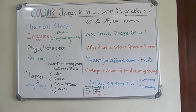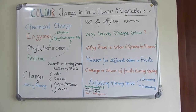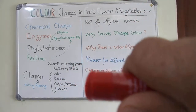Everybody knows chlorophyll is the pigment associated with photosynthesis, and magnesium ion is the main metal ion responsible for the green color. Chlorophyll is green. Xanthophyll is yellow. Carotene — for example, think about carrot — is orange. And anthocyanin gives a red color.